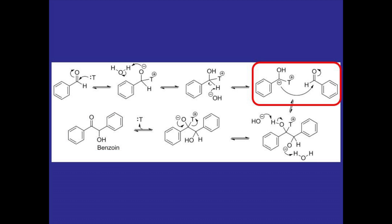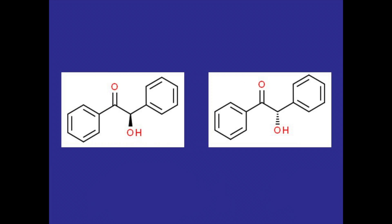Notice that when the carboanion attacks the benzaldehyde molecule it is not stereospecific so when we look at the orientation of the alcohol group and the stereocenter formed we're going to see a racemic mixture of the R and S enantiomers.